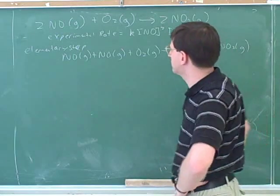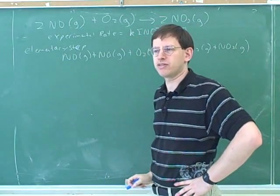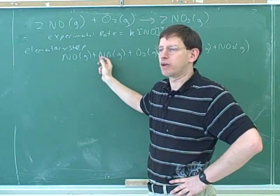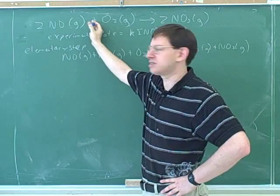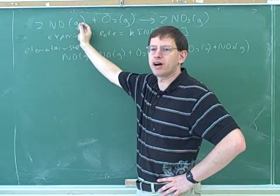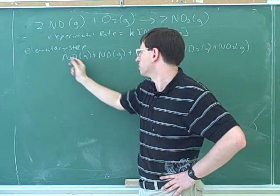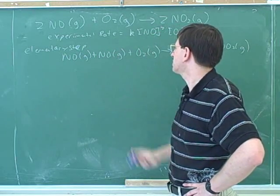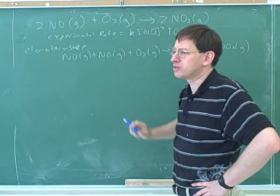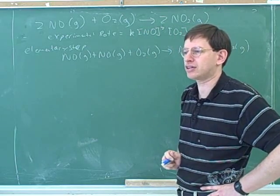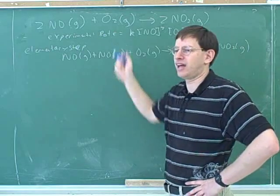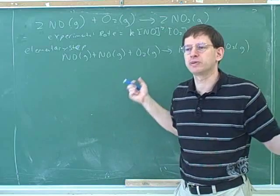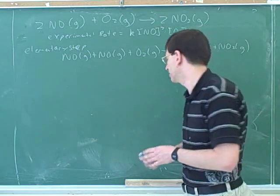We were talking earlier about how your textbook uses the convention that when things are reacting with each other in an elementary step, you should write them separately, even if they're the same thing. So if I was going to test whether this was the elementary step, I should rewrite it like this. It's already OK to write the overall reaction like this, but we would write the elementary step with these two species separately. If this was the elementary step, it would match our rate law, but we're still suspicious because termolecular reactions happen but they're rare — it's rare that three things collide in just the right way.